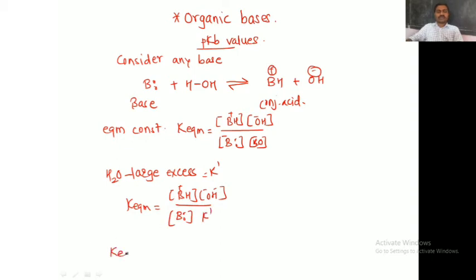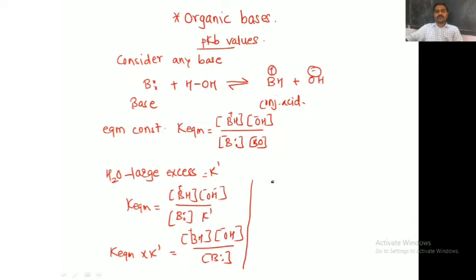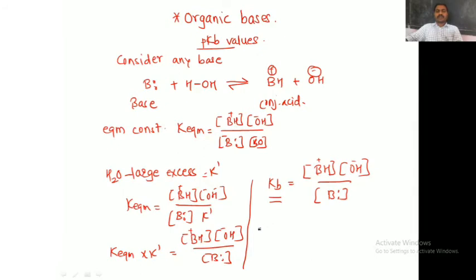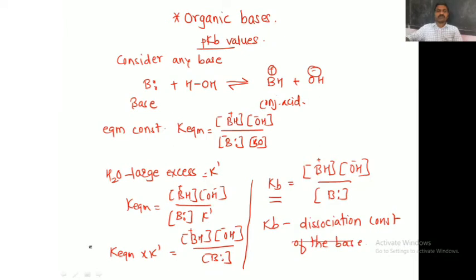Rearranging the equation: K equilibrium multiplied by the water concentration constant equals the concentration of BH⁺ and OH⁻ divided by the concentration of base. This product K_eq × K' is nothing but KB. So KB equals [BH⁺][OH⁻] divided by [B]. This is the value of KB.